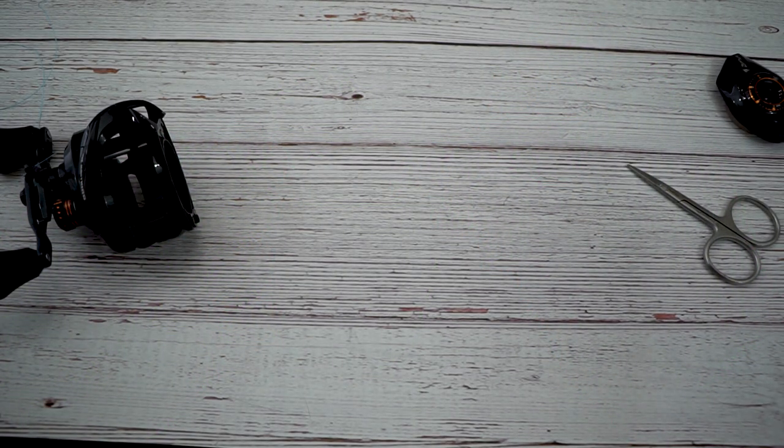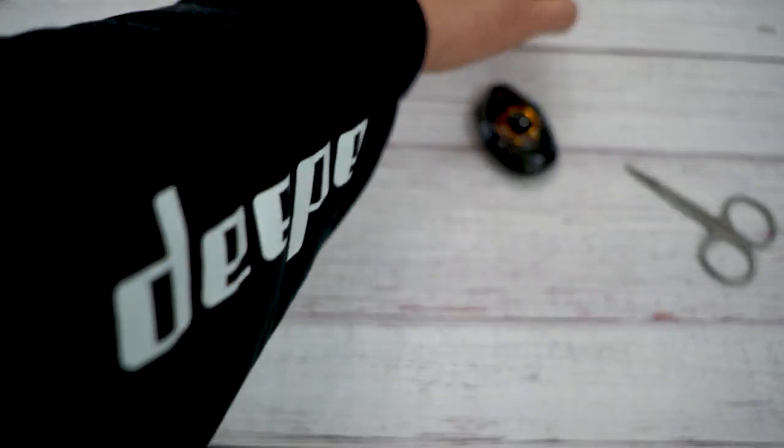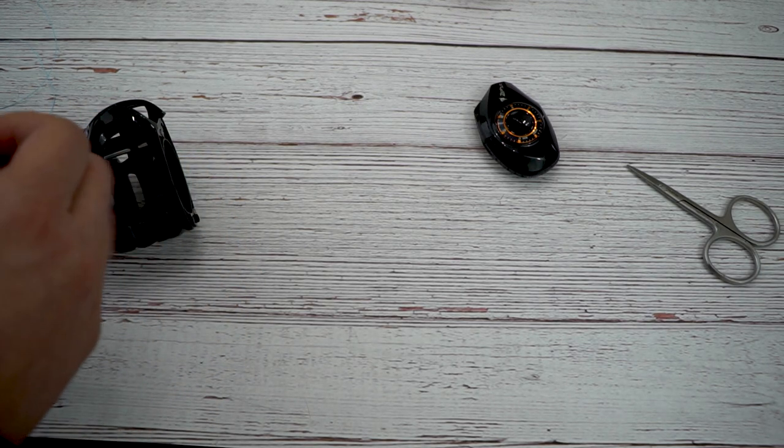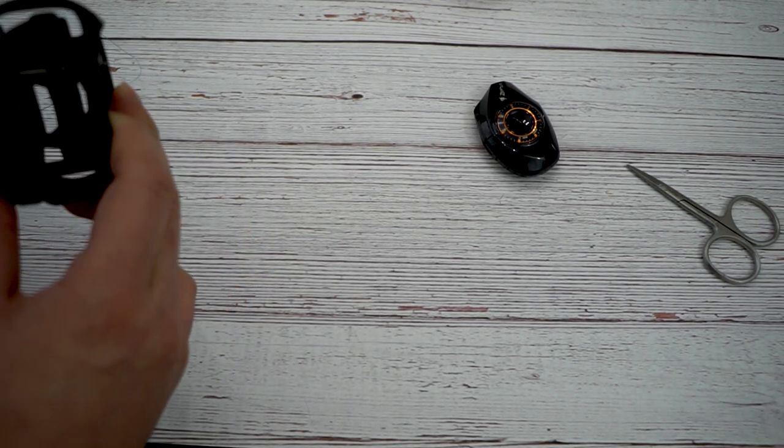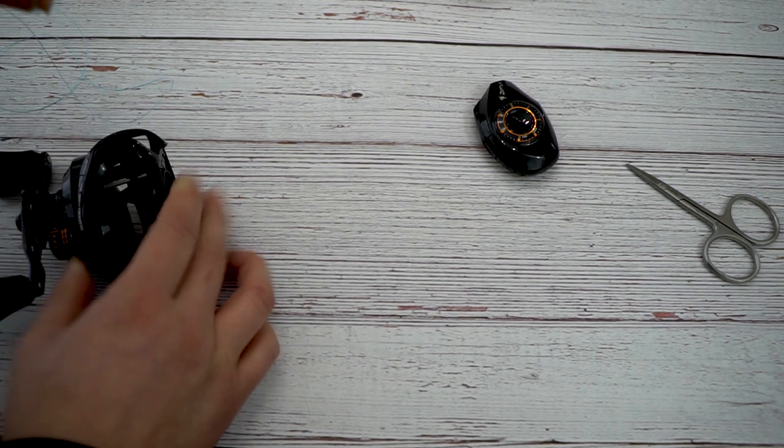The first thing I like to do is take off your plate, take out your spool, and then make sure your spool is secure. You don't want it to roll off the table. But you want to take your line and thread it through the guide of your reel.